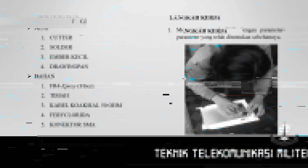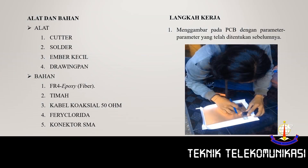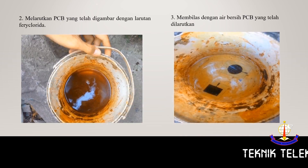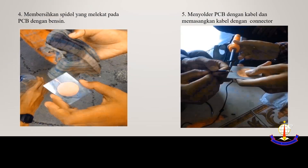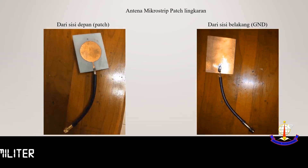Selanjutnya langkah kerja yang akan dilakukan. Pertama, menggambar pada PCB dengan parameter yang telah ditentukan. Kedua, larutkan papan PCB yang telah digambar dengan larutan feri klorida, tunggu hingga bagian yang tidak digambar larut. Ketiga, bilas papan PCB dengan air bersih. Keempat, bersihkan spidol yang melekat pada PCB dengan bensin. Kelima, solder papan PCB dengan kabel koaksial dan pasang konektor SMA. (Fabrication steps: 1) Draw the antenna on the PCB per design parameters. 2) Etch the PCB in ferric chloride solution until unexposed copper dissolves. 3) Rinse with clean water. 4) Clean the marker ink with petrol. 5) Solder the coaxial cable and attach the SMA connector.)